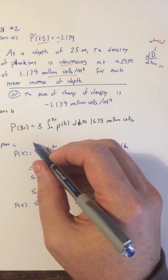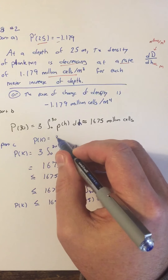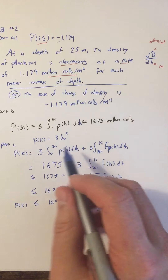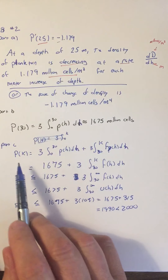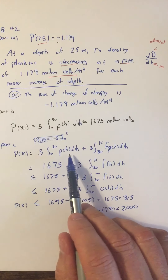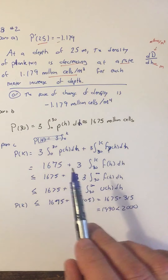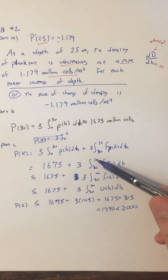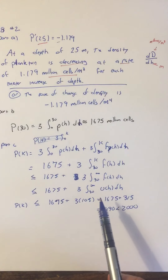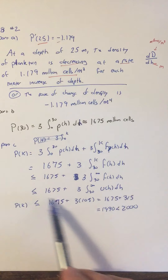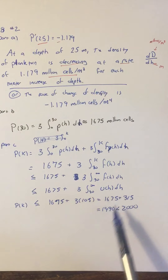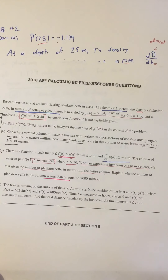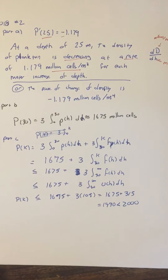We could write p of k as 3 times a single integral from 0 to k, but we can't because the two pieces involve two different functions. So p of k equals 3 times the integral from 0 to 30 of p of h plus 3 times the integral from 30 to k of f of h. We know a value for the first part; for the second, we know k is less than infinity and f is less than u, so the expression is bounded by 105. Working it out gives something less than 2000, which is exactly what we needed to explain.